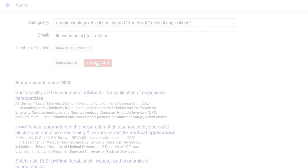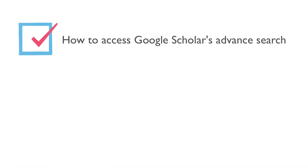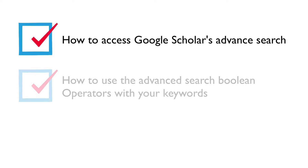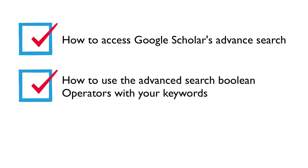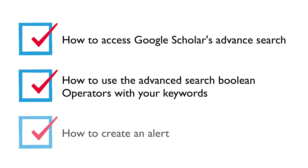In this video, we covered how to access Google Scholar's Advanced Search, using the Advanced Search when you have lots of keywords and want Google Scholar to add your Boolean operators for you, and creating an alert to stay up to date with new articles on your topic.